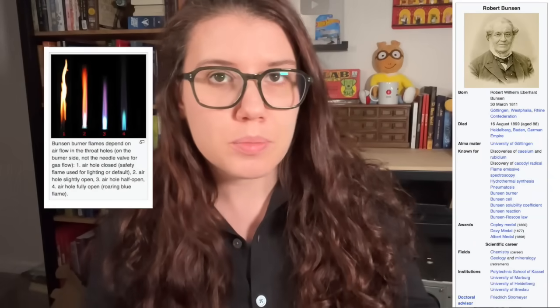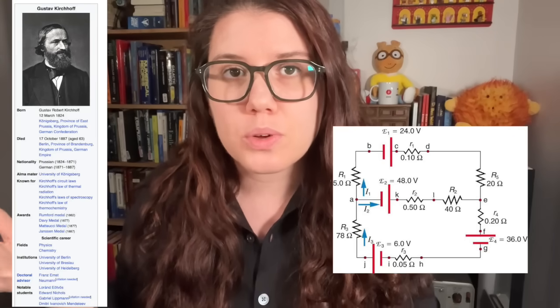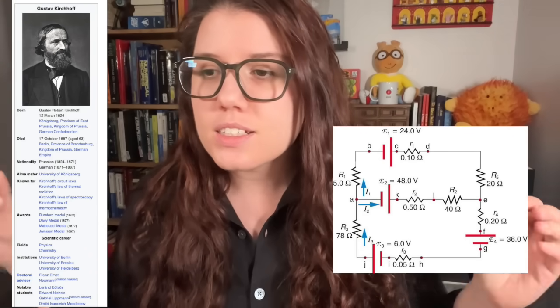In the 1800s there was this scientific duo of platonic best friend roommates: Robert Bunsen, you know of the Bunsen burner, and Gustav Kirchhoff, you know of Kirchhoff's circuit rules — probably the most annoying problem you had to do in undergrad. Together they developed a piece of equipment called a spectroscope.